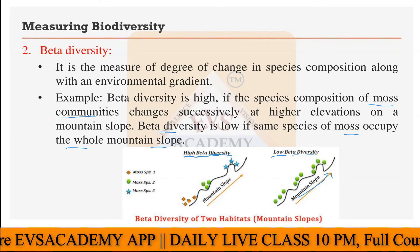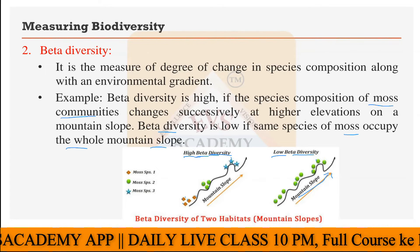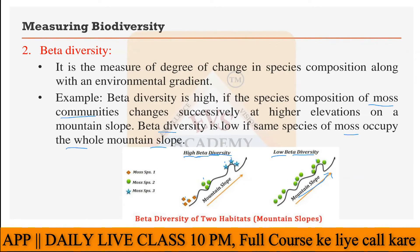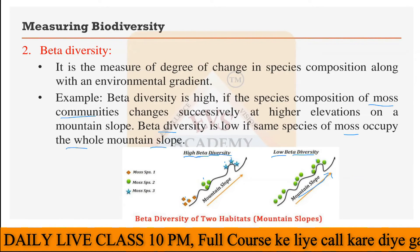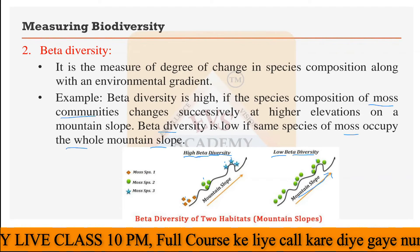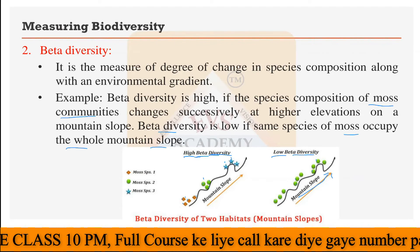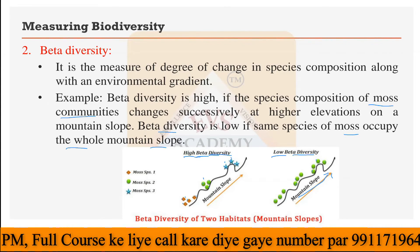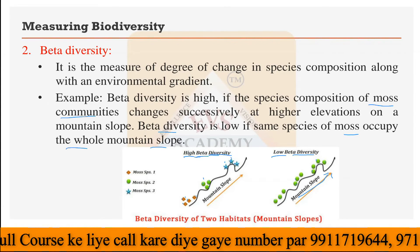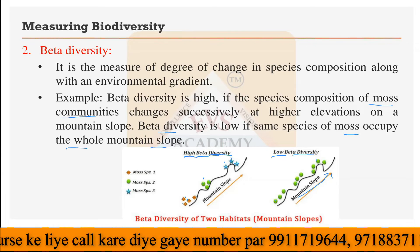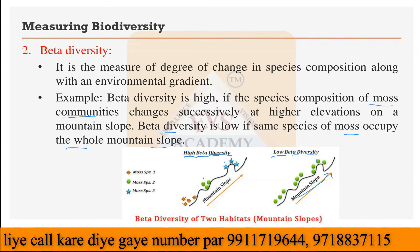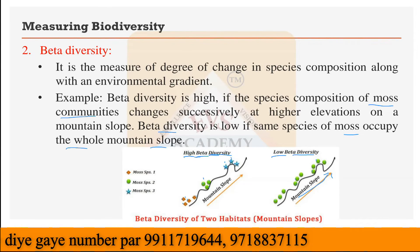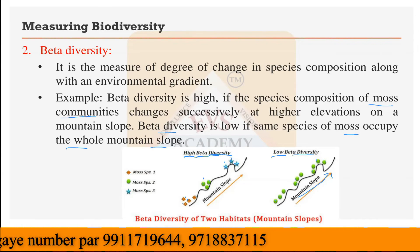So this is moss species one, two, and three. The changes you can find indicate high beta diversity, while no change at all in species composition means very low beta diversity. This is what beta diversity is.